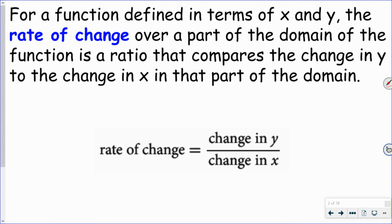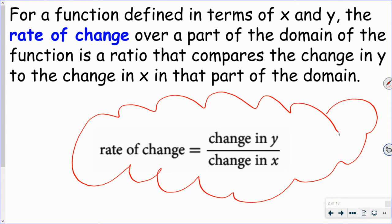For a function defined in terms of X and Y, the rate of change over part of the domain of the function is a ratio that compares the change in Y or the change in X. Here's what you need to write in the upper domain: Rate of change is the change in Y over the change of X. Yesterday, we talked about another way to write that. Now, I want you to go ahead and write these words down, but I would like for you to also write down delta Y over delta X.